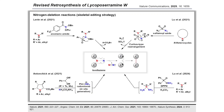Liu's group reported nitrogen deletion reactions of N-heterocycles with sulfamoyl azide, where the mechanism includes a Curtius-type rearrangement to produce the isodiazene intermediate. They also utilized O-diphenylphosphinyl hydroxylamine as a nitrogen transfer reagent to generate the isodiazene species through a dialkyltriazene intermediate.